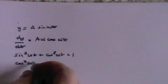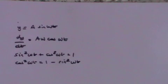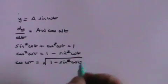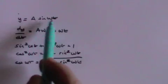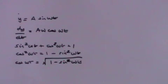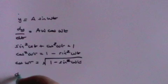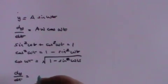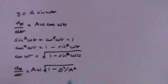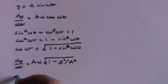Thus, cosine squared omega t equals 1 minus sine squared omega t. Therefore, cosine omega t equals the square root of 1 minus sine squared omega t. But sine squared omega t equals y squared over a squared, since y equals a sine omega t. So dy by dt equals a omega times the square root of 1 minus y squared over a squared, which gives dy by dt equals omega times the square root of a squared minus y squared.